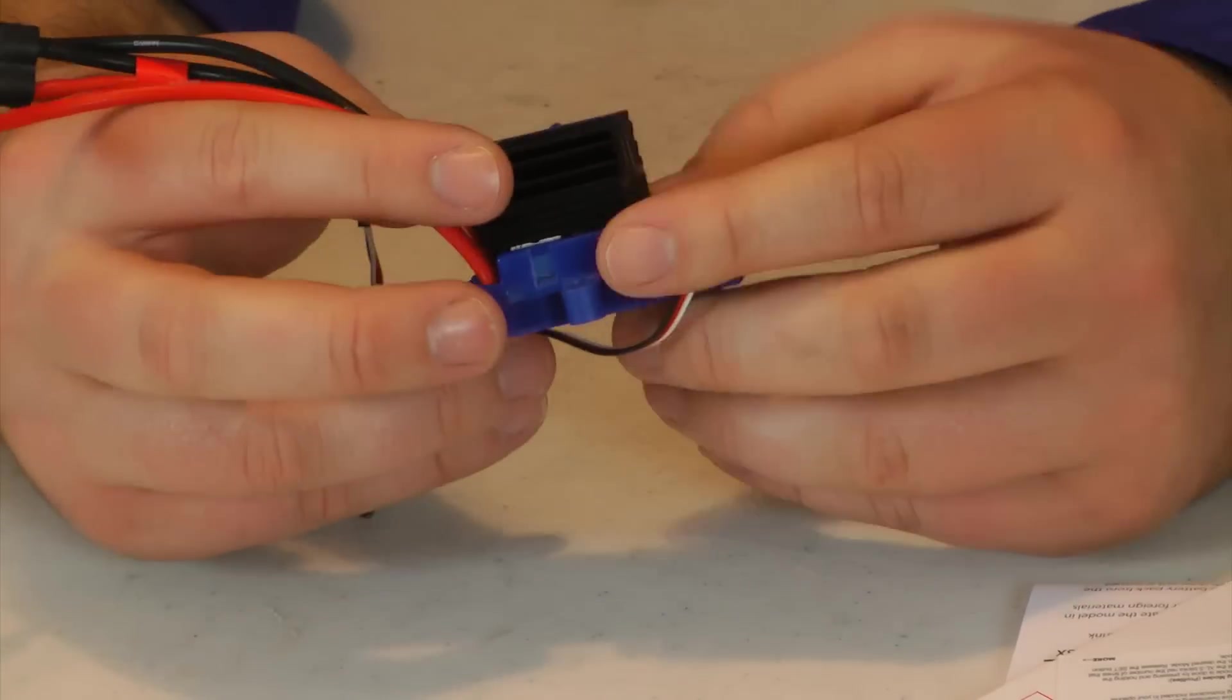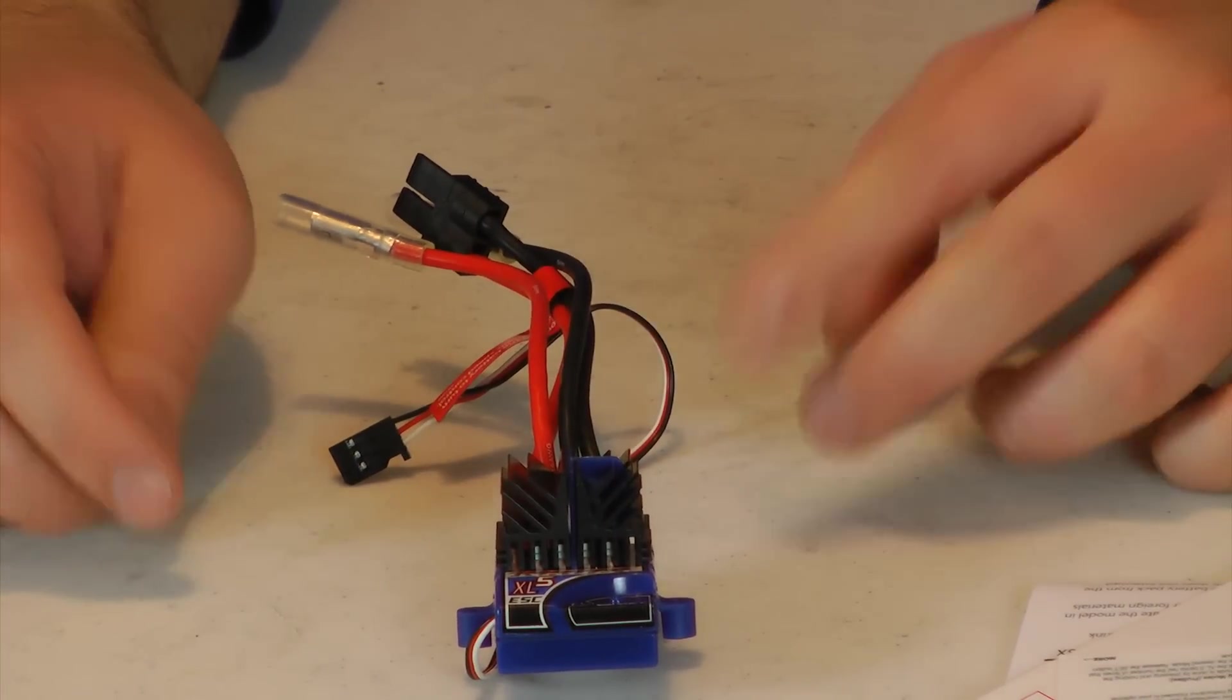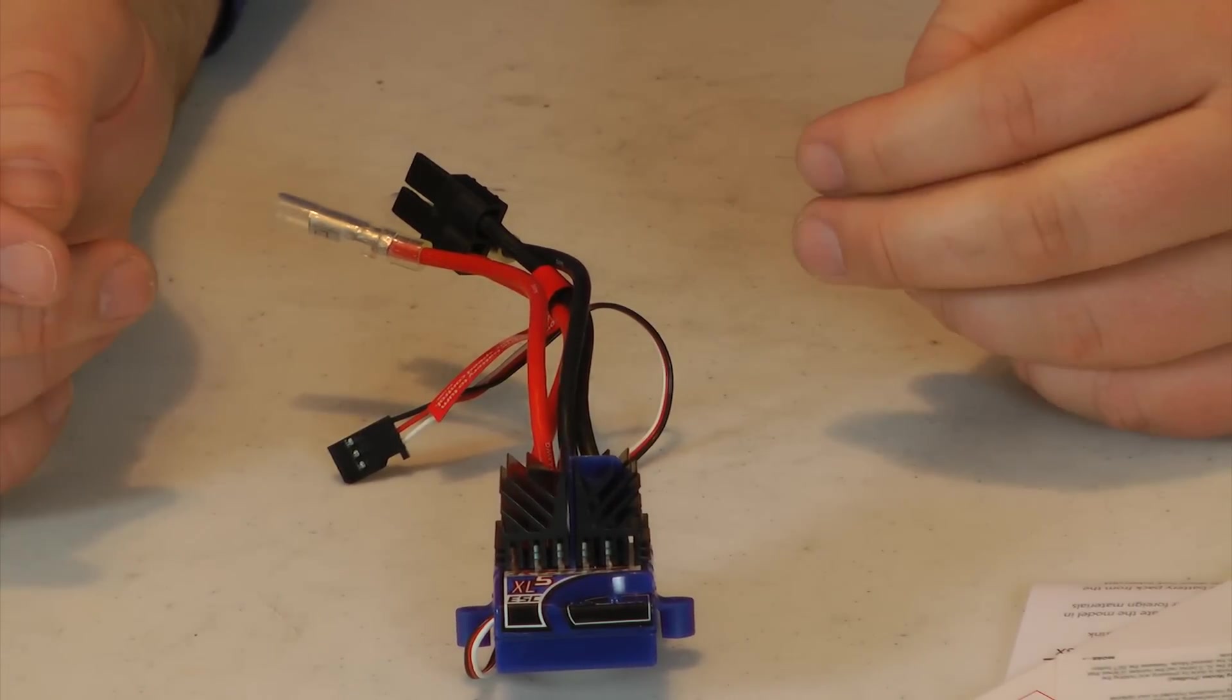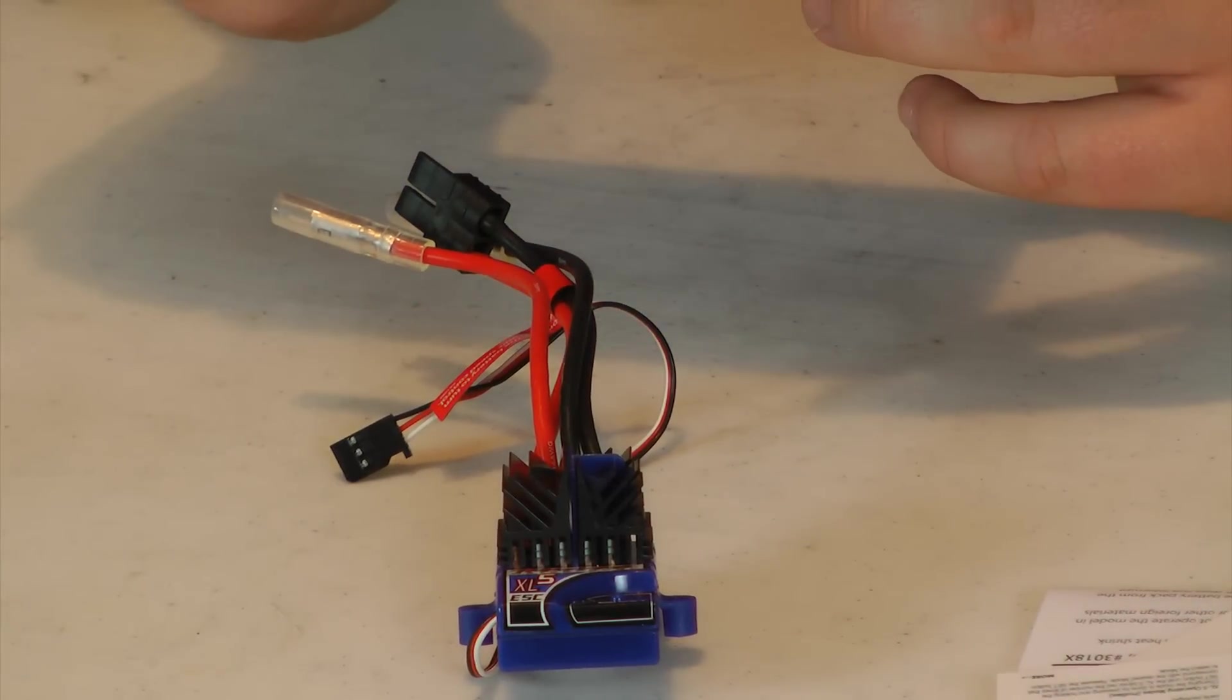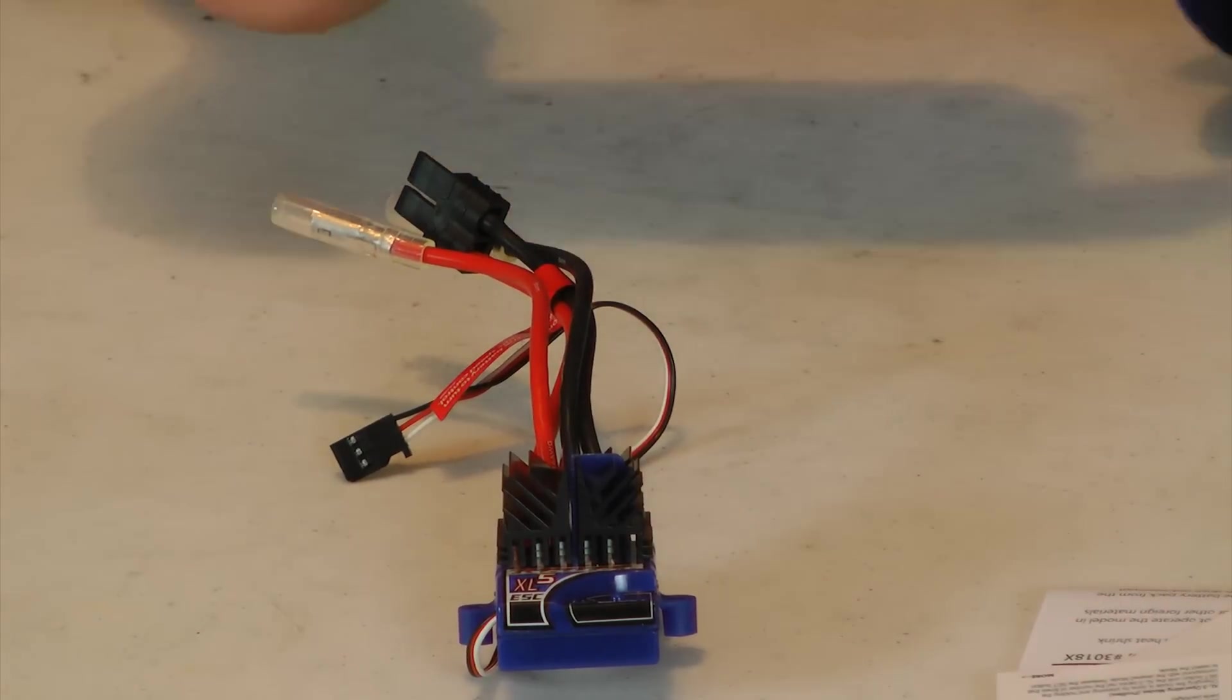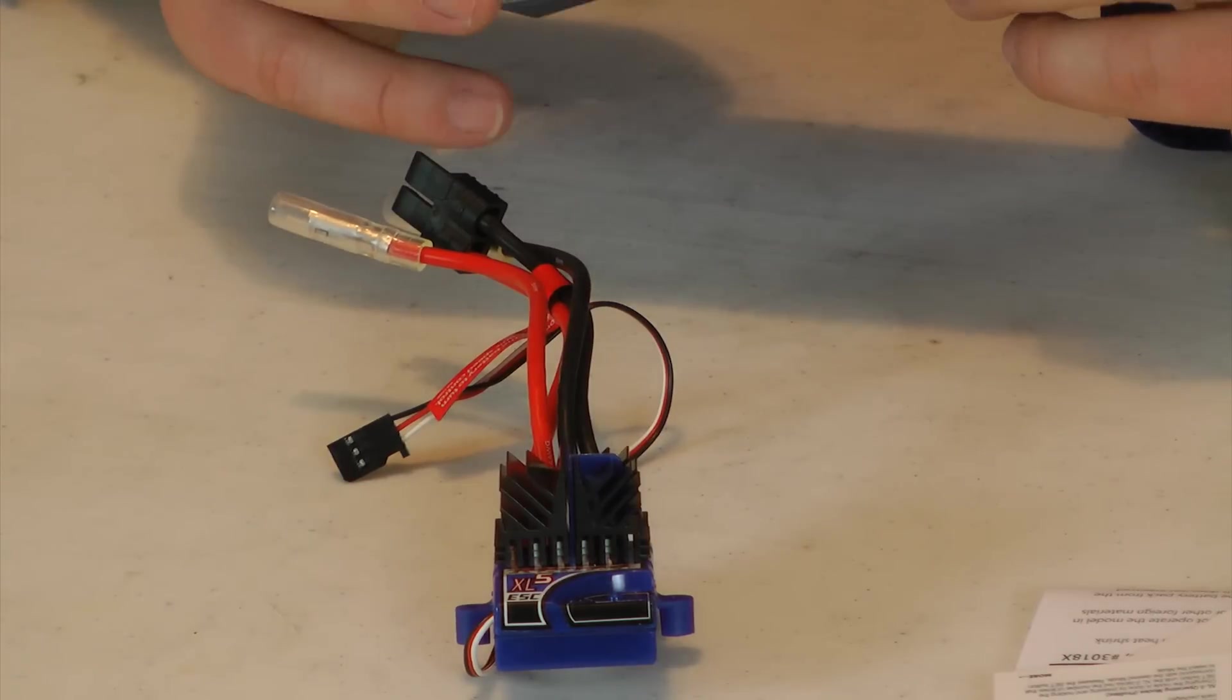But this is the stock Traxxas XL5 speed control. If you're running brushed, it's really not a bad speed controller. If you want to run brushless, or you want something with a lipo cutoff, it's not going to work for you. But really, everything's set. And this is, of course, like anything else with them, it's all waterproof. So you can run anything from four to eight cell batteries. And that's how you do it.